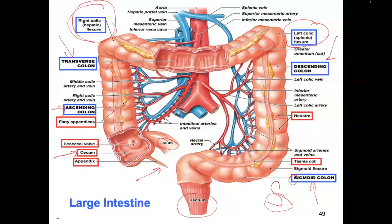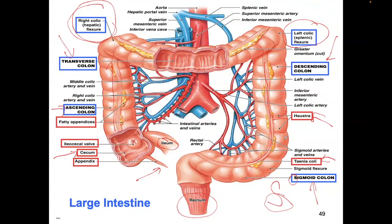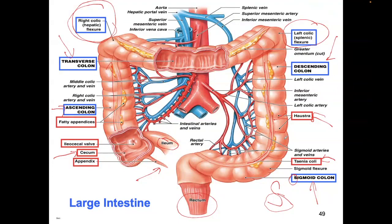These little bumps right here are called haustra. And this band going up and all the way across is called the tinea coli. Those are the main anatomical structures I wanted you to know.